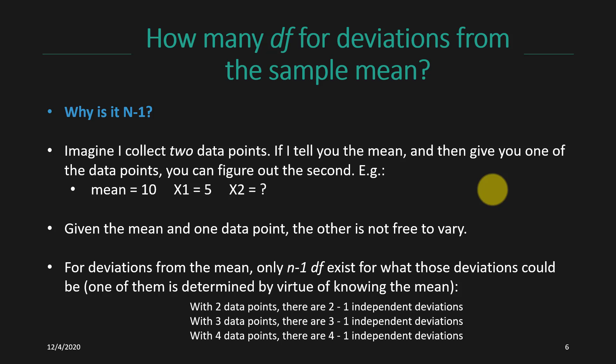Why is it n minus one, and why does that balancing act of making the denominator smaller work? Let's walk through this conceptually in terms of the number of data points and how they work in the calculation of standard deviation and variance. If I collect two data points and I tell you the mean and one of the data points, you can easily figure out what the second one would be. For instance, if the mean is 10 and x1 was 5, you can deduce x2 must have been 15 — those are the only two numbers that give a mean of 10. So only one data point is free to vary; we've lost a degree of freedom.